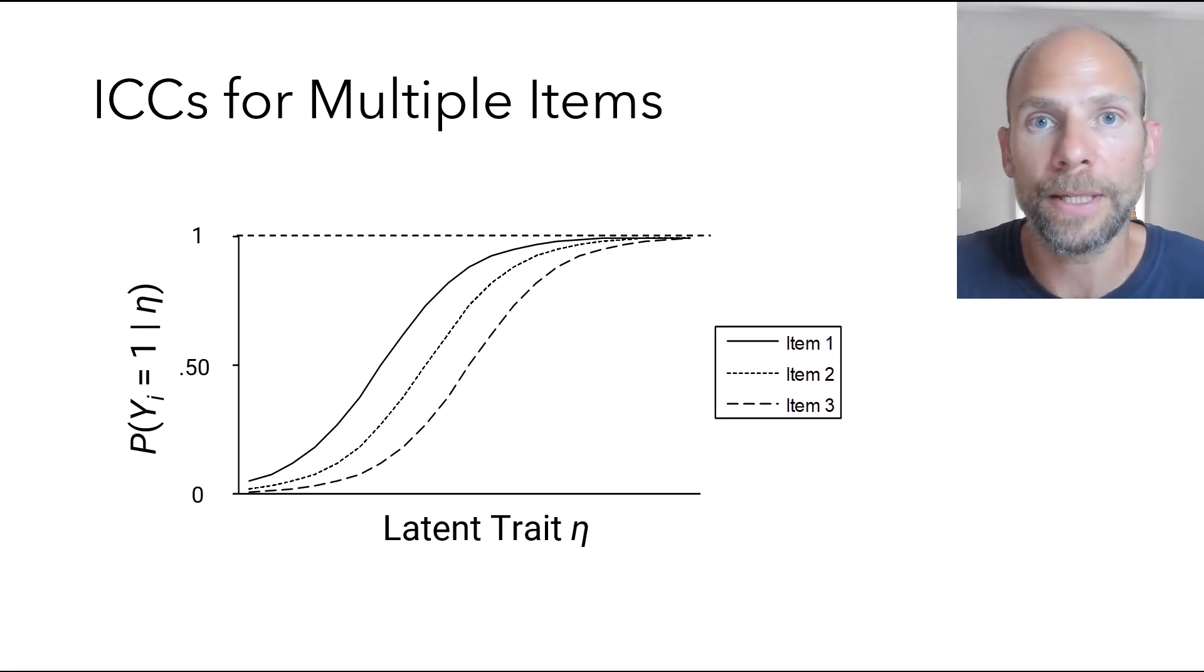And they will all reflect the same difference in the item solution probability. And that's called specific objectivity. That is a desirable property that comes with a Rasch model, but not with other IRT models.